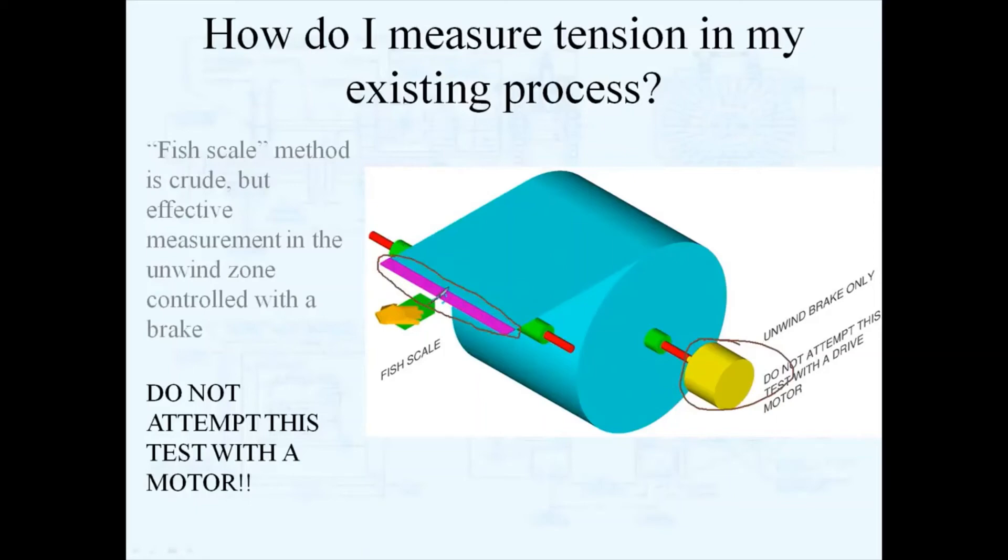You can hook a fish scale through there. When you pull on this fish scale, it's going to give you a certain amount of pounds of how much it takes to start this roll turning. When this roll starts to turn, that's literally the tension on your web at that point.